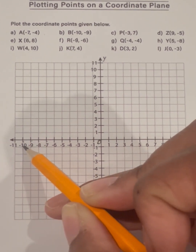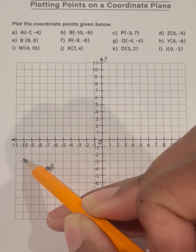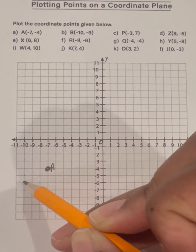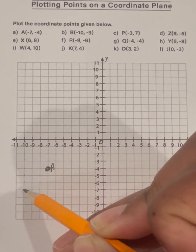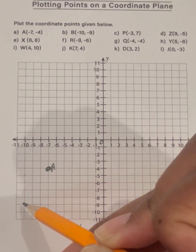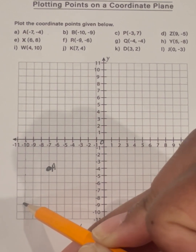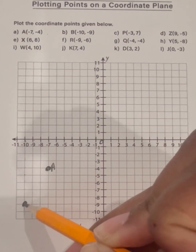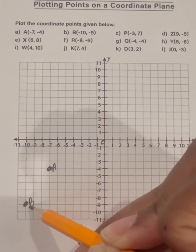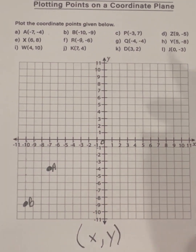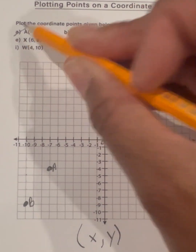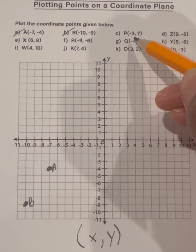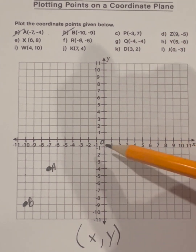And then we're going to go down because it is a negative nine — negative one, negative two, negative three, negative four, negative five, negative six, negative seven, negative eight, and negative nine. And this point is B. So we have done A and B. The next one is negative three and seven.